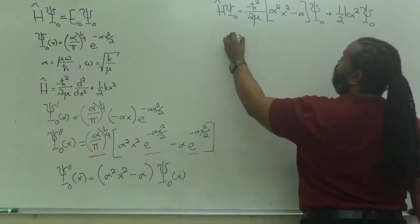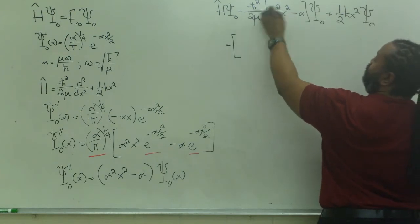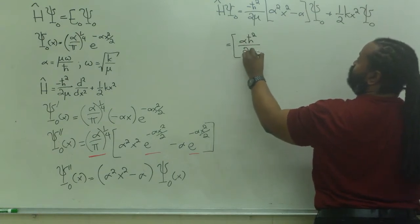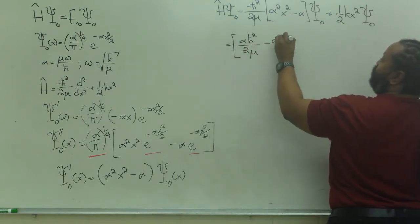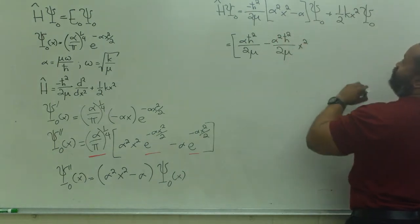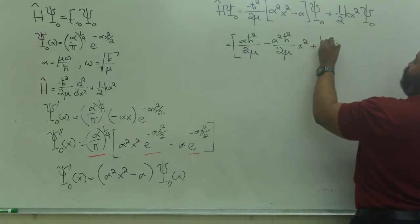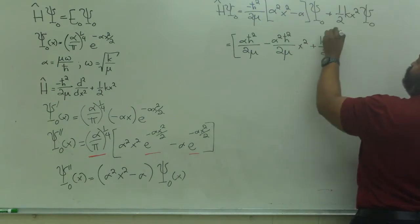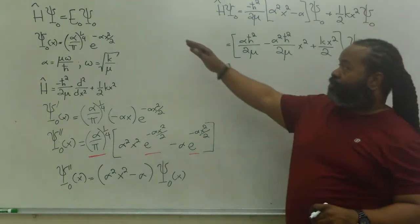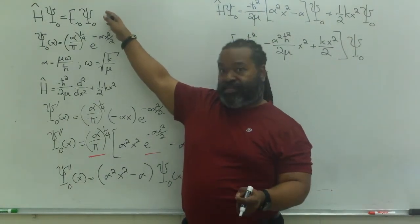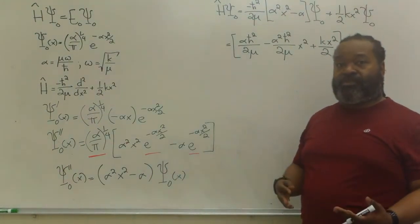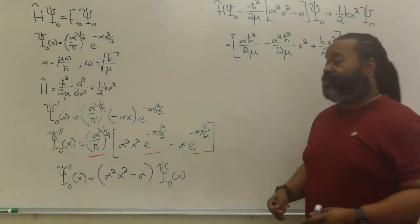So, I'll have the negatives we'll combine. So, I have alpha h bar squared over 2 mu minus alpha squared h bar squared over 2 mu times x squared plus kx squared over 2, all of which is multiplying the original wave function. So, in order to get this result from the time-independent Schrodinger equation, I simply need to verify that all of this will cancel down to h bar omega over 2, which is the energy for the v equals 0 wave function.